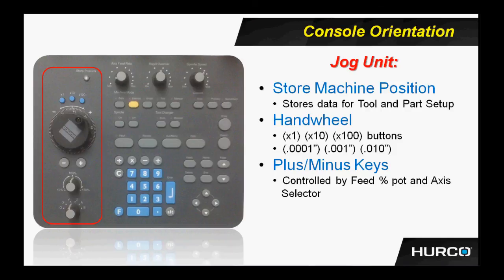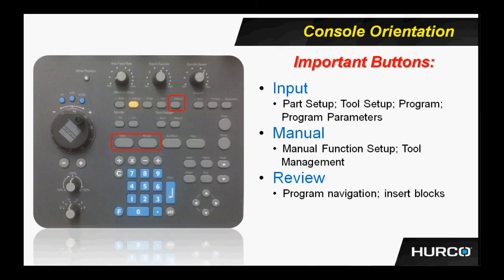Some important buttons that you'll use just about every time you set up or operate the machine are the input, review, and manual buttons. The input button allows us access to screens necessary for setup, programming, and operation of the machine. The review button will bring up an outline view of the program, used mostly for program navigation and manipulation of blocks such as cut, copy, paste, and delete. The manual button is used for any kind of manual setup function, tool management, or execution of tool changes, and you can also adjust the rapid feed rate under the manual screens. One of these three buttons is going to be used to do just about anything you're trying to find within the control.